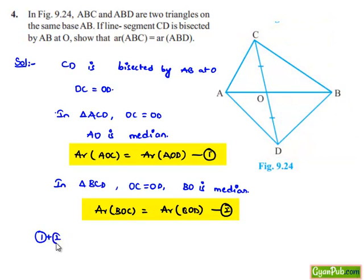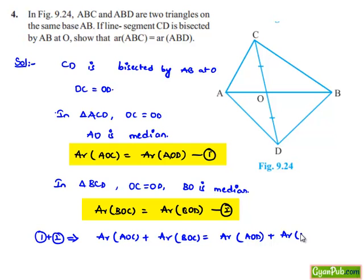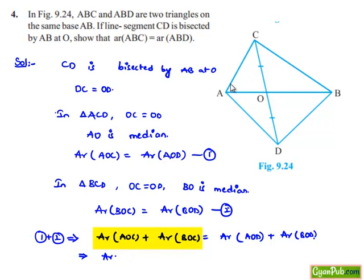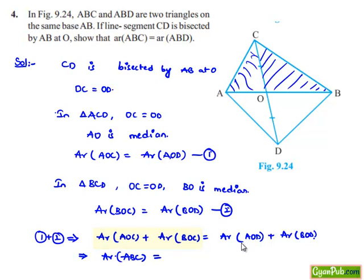Now, let us add both equations, that is equation 1 plus equation 2, which implies: area of triangle AOC plus area of triangle BOC is equal to area of triangle AOD plus area of triangle BOD. Here, the area of triangle AOC and area of triangle BOC represent the shaded regions, which together equal the total area covered under triangle ABC.